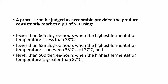Staph aureus likes to grow in the temperature range between 15.6°C and 60°C. As it grows, other bacteria drop the pH. What we need to calculate is a 'degree hour.' The limits are: fewer than 665 degree hours when the highest temperature is less than 33°C; fewer than 555 degree hours when the highest temperature is between 33°C and 37°C; or fewer than 500 degree hours when the highest temperature is greater than 37°C.